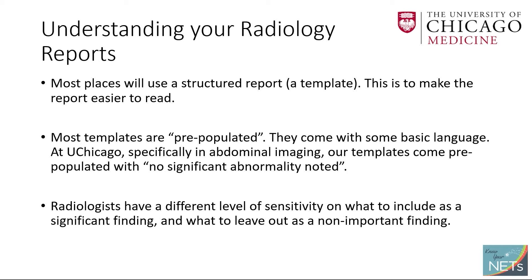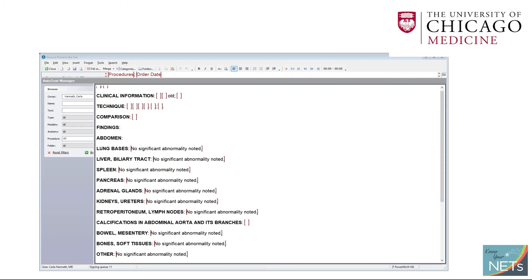Moving on to understanding your radiology reports. Most places use structured reports to make the report easier to read. Most templates, especially in the US, are pre-populated — they come with some basic language. At the University of Chicago, for example, our templates come pre-populated with 'no significant abnormality noted.' Radiologists have different levels of sensitivity on what to include as a significant finding. However, if I find something abnormal, I'll replace that with 'there's a nodule in the lung base' or 'there is an opacity that may represent pneumonia,' and so on.